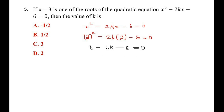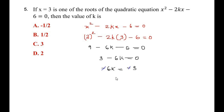Combining like terms, 9 minus 6 gives 3, so 3 minus 6k equals 0. Moving 3 to the other side gives negative 6k equals negative 3. The negatives cancel, so k equals 3 over 6, which reduces to 1 over 2. The answer is option B, 1 over 2.